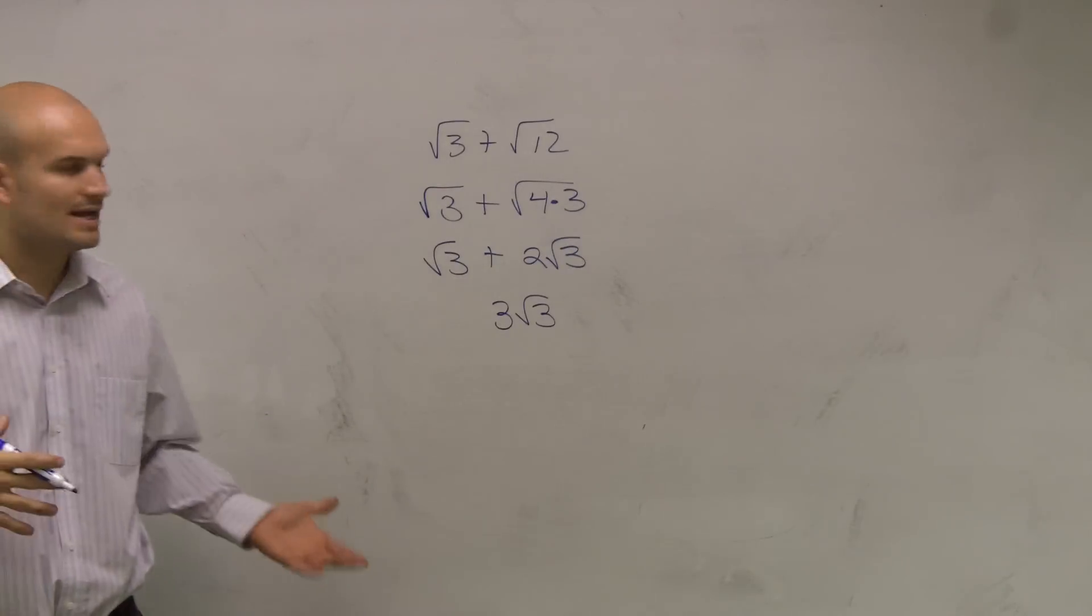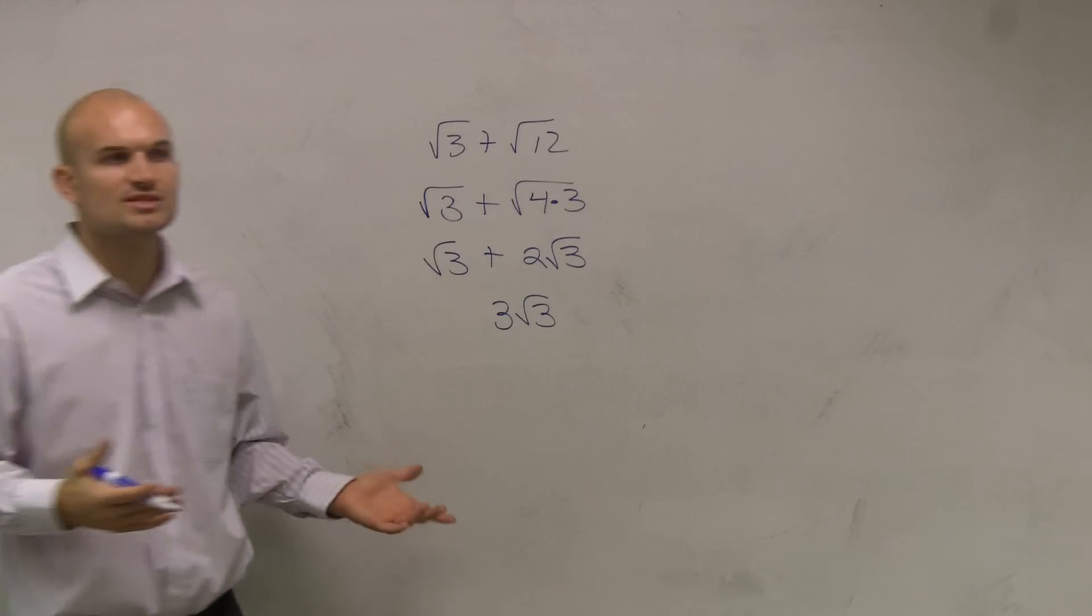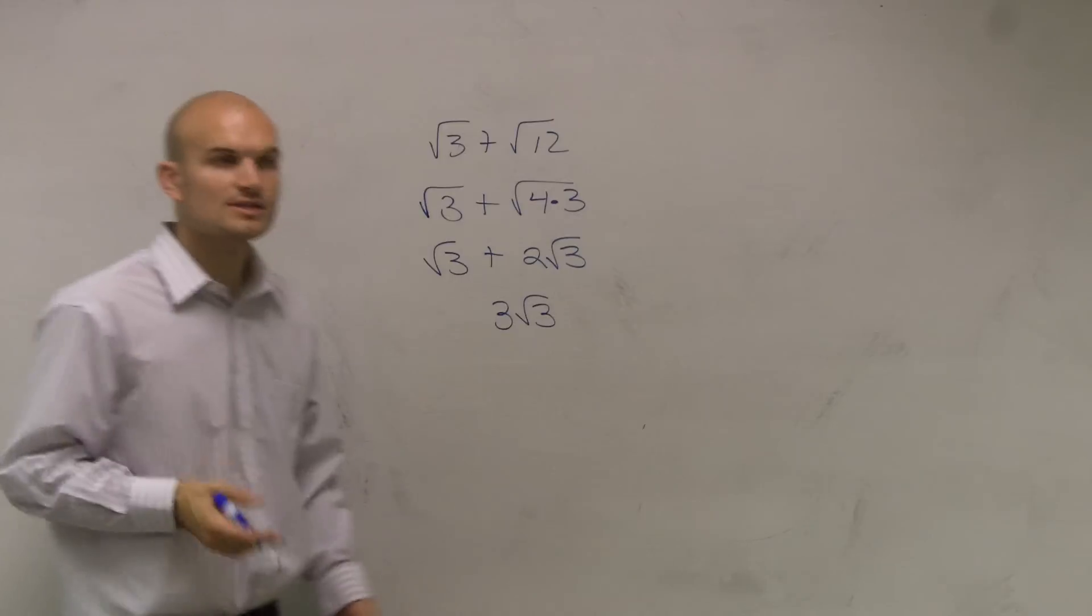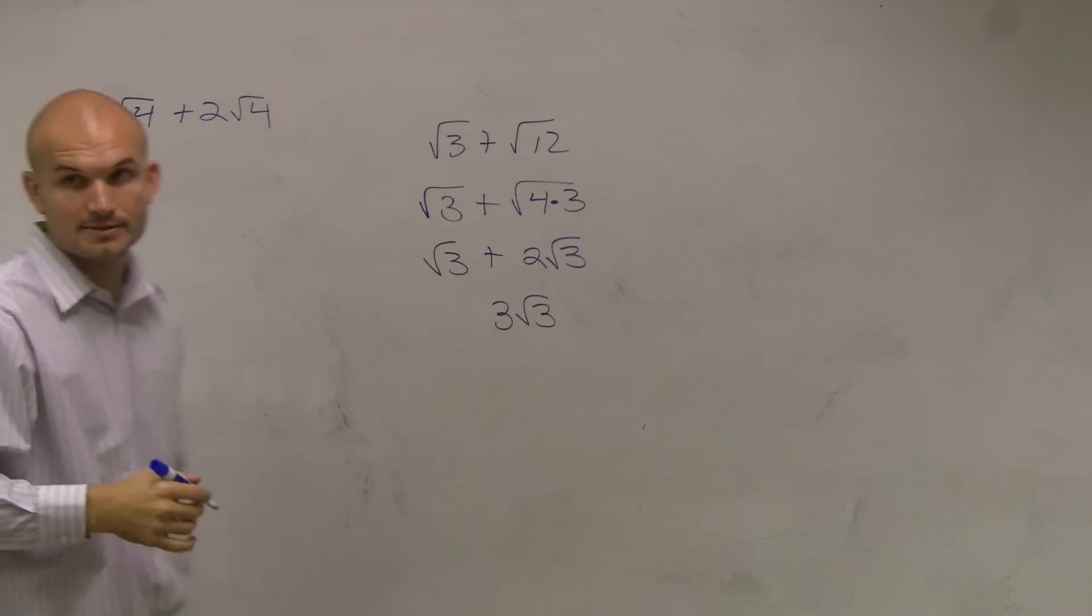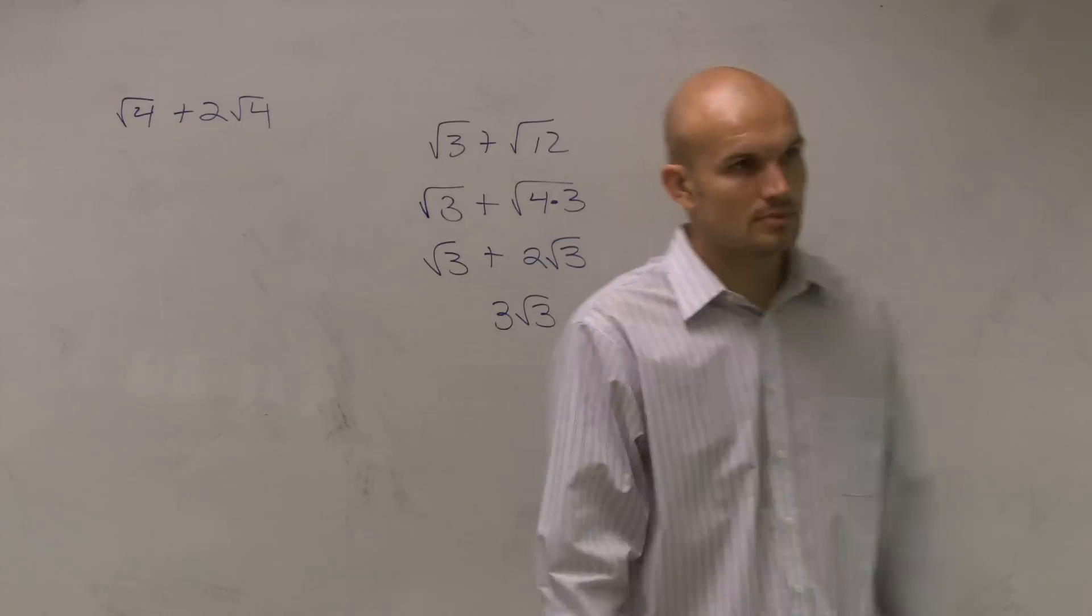Now some of you might say, why can't it be 3 radical 6 or 2 radical 6? Well, let's just use some answers that we know to show why we can combine these. So let's say I add square root of 4 plus 2 times square root of 4.